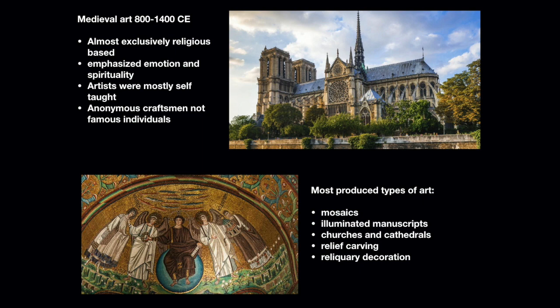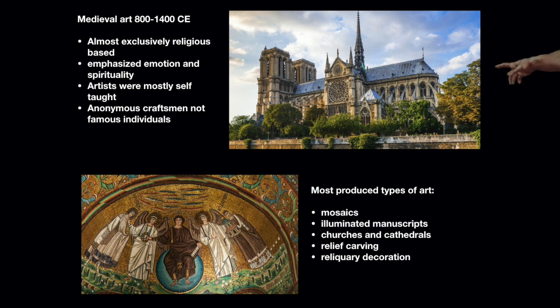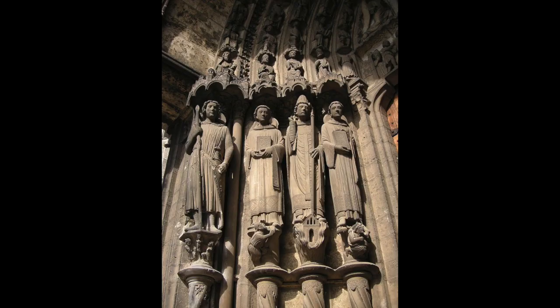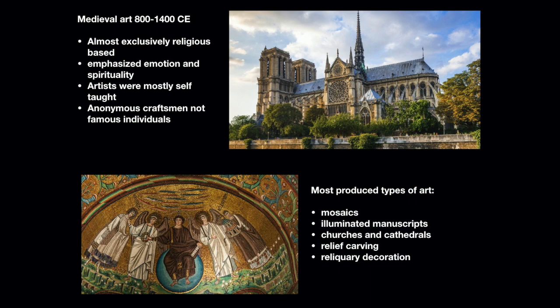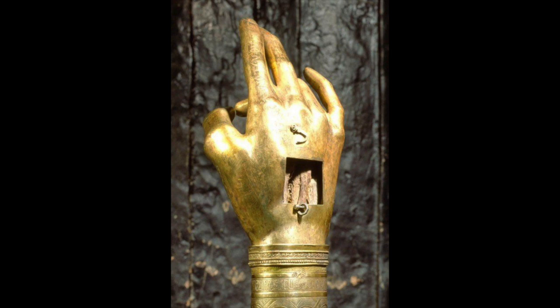It was a joint effort, an anonymous effort, to reflect religiosity — not for self-worth but to honor God. The kinds of art produced were mosaics, made from tiny stones called tesserae or glass; illuminated manuscripts, which were copied books — mostly Bibles or stories of saints, though also some pagan authors; churches and cathedrals with relief carving, meaning sculpture carved from a wall that you couldn't walk around; and reliquary decoration — ornate boxes made to hold items like the crown of thorns or the bones of Saint John the Baptist.